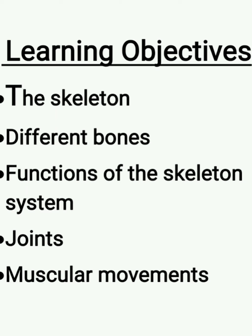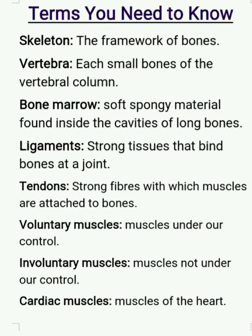Now, some important terms you need to know. Skeletal: the framework of bones. Vertebra: each small bone of the vertebral column. Bone Marrow: the soft, spongy material found inside the cavities of long bones. Ligament: strong tissues that bind bones at a joint. Tendon: strong fibers by which muscles are attached to bone.